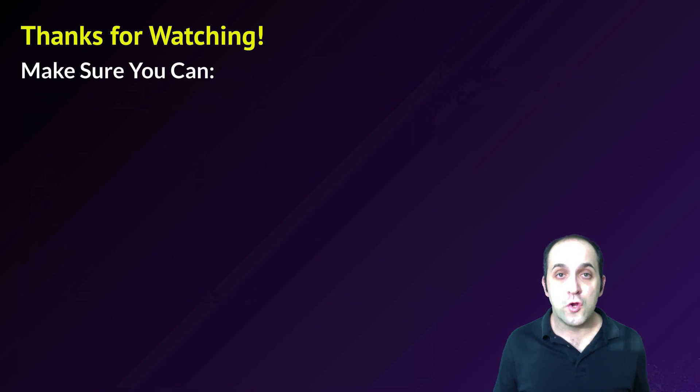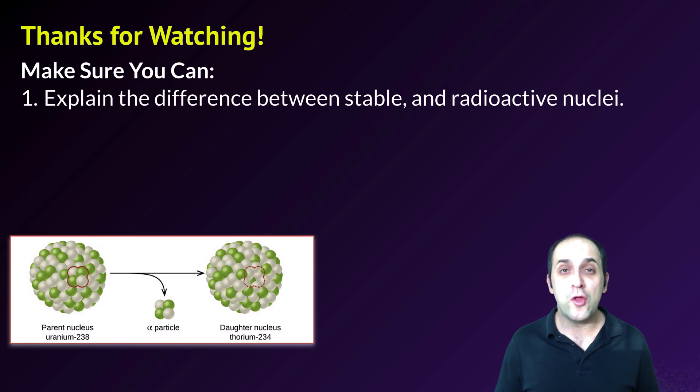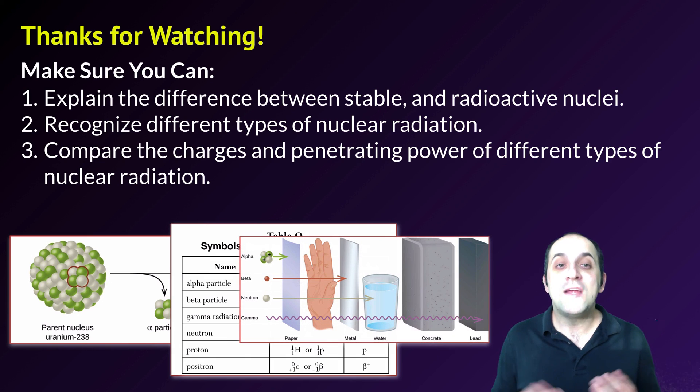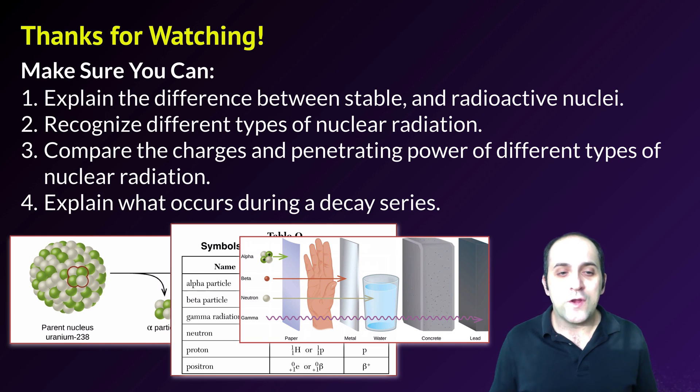Thanks so much for watching our introduction to nuclear stability. Make sure that you can do the following here at the end. Make sure that you can explain the difference between stable and radioactive nuclei, particularly in terms of the ratio of protons to neutrons, the total number of nucleons, and the strong nuclear force. Make sure that you can recognize the different types of nuclear radiation that radioactive nuclei produce as they decay. Make sure that you can compare the charges and penetrating power of different types of nuclear radiation. And finally, make sure that you can explain what occurs during a decay series, why an isotope moves through a series of different isotopes before finally reaching a stable isotope. If you can do all of those things, you're doing great. If not, take a moment and write down any questions that you have. You can always get in touch with me through the information in the info field, or by leaving a comment on the video. Thanks again for watching. I really appreciate it. Have a great day.